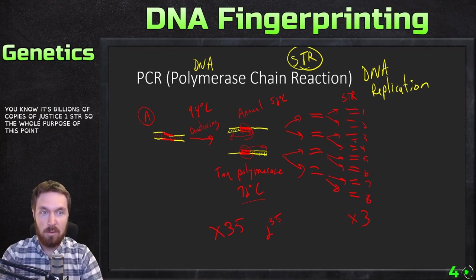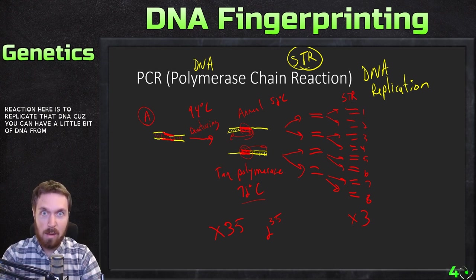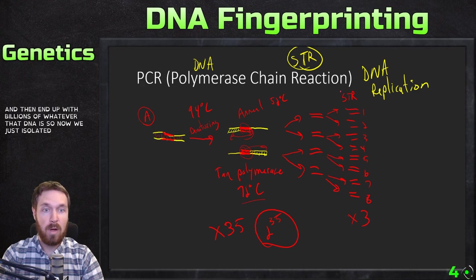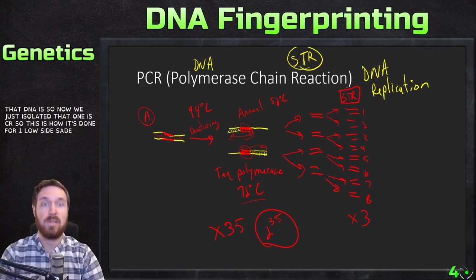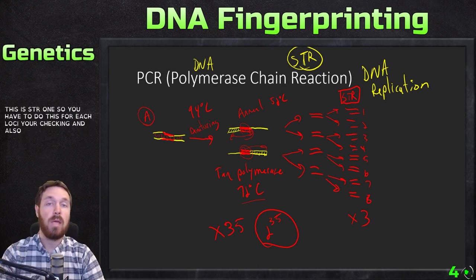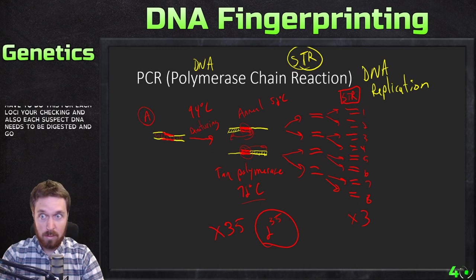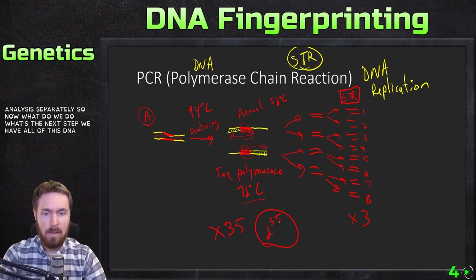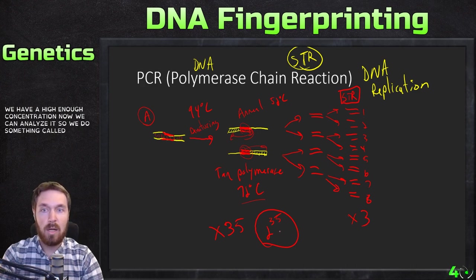The whole purpose of polymerase chain reaction is to replicate that DNA — you can start with a tiny bit of DNA from a crime scene and end up with billions of copies of that DNA. So now we've isolated that one STR. This process must be done for each locus you're checking, and each suspect's DNA must go through PCR analysis separately.